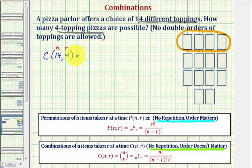So this is equal to n factorial, or 14 factorial, divided by n minus r factorial times r factorial, which would be 14 minus 4 factorial times 4 factorial, which is 14 factorial divided by 10 factorial times 4 factorial.